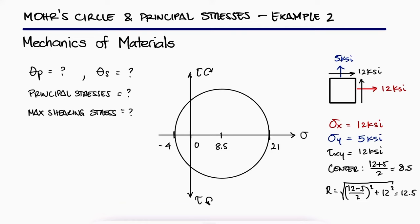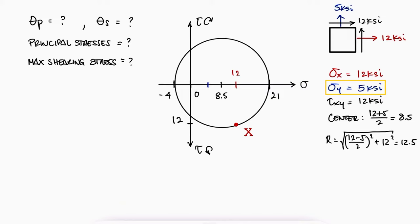The tau axis would be located at sigma equal to zero. The capital X location would be at 12 on the sigma axis and the 12 shearing stress in the counter-clockwise tau axis. The capital Y location would be at 5 in the sigma axis and the 12 shearing stress that is trying to rotate the element clockwise.